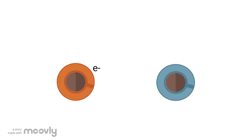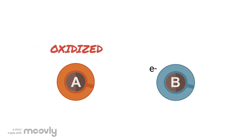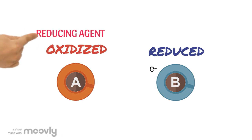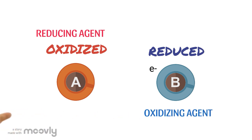In this diagram, atom A loses electrons while atom B is gaining that electron. So atom A is oxidized while atom B is reduced. Therefore, atom B is an oxidizing agent.